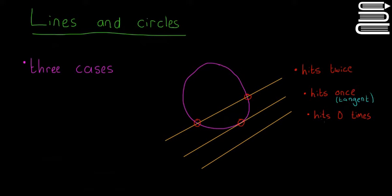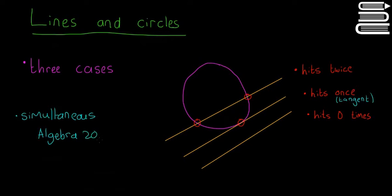To find out which case applies, they'll give you a line and a circle and ask if it hits once, twice, or zero times. You'll need to use simultaneous equations. These are exactly like the videos in Algebra 20 and 21. We have one linear equation — that's the equation of the line, with no powers in x and y.